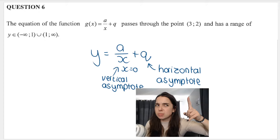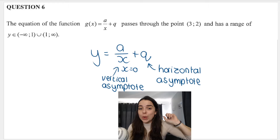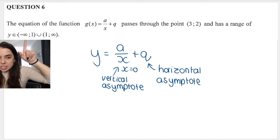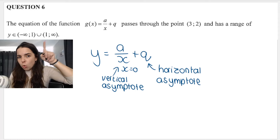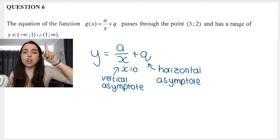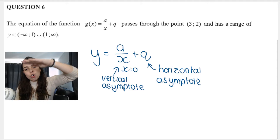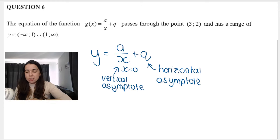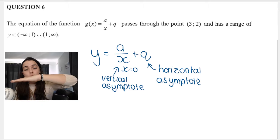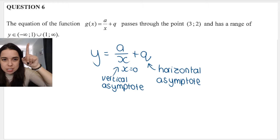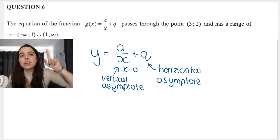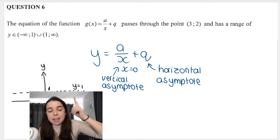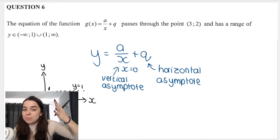We have a vertical asymptote where x equals 0, and a horizontal asymptote whose value I need to determine. They give me the range: y is an element of negative infinity to 1, not including 1, or 1 to positive infinity, not including 1. This tells me the y-values go from negative infinity, exist right up to — but not including — y equals 1, then continue from 1 to positive infinity. So there is a horizontal asymptote at y equals 1, which means q equals 1.